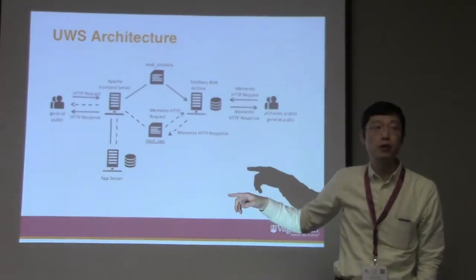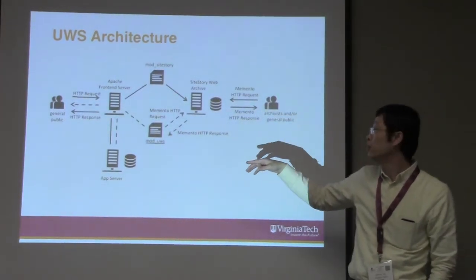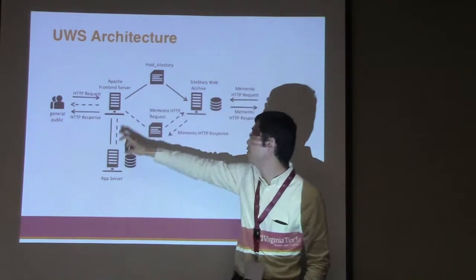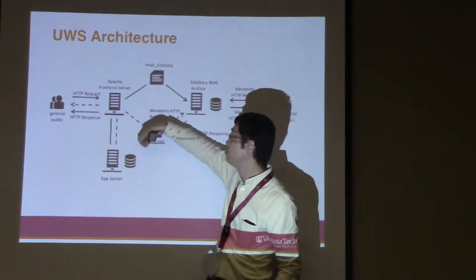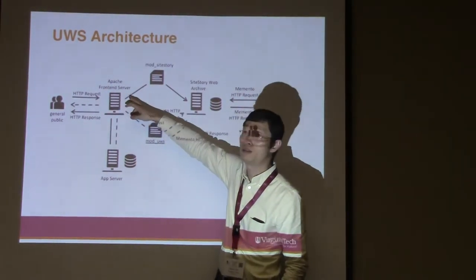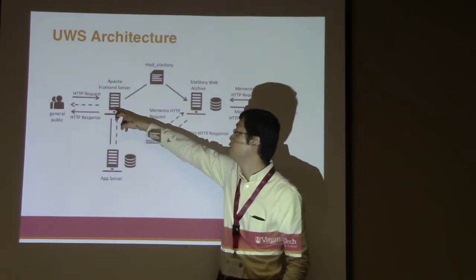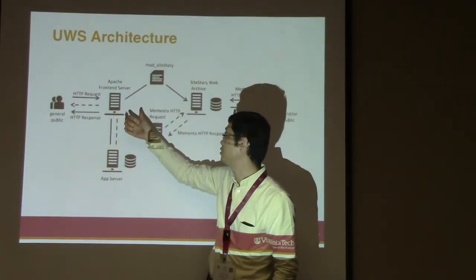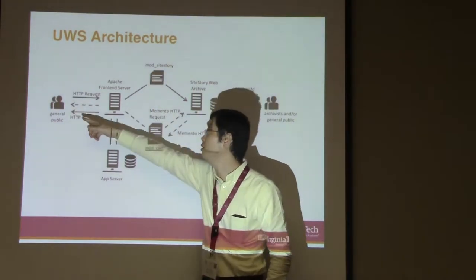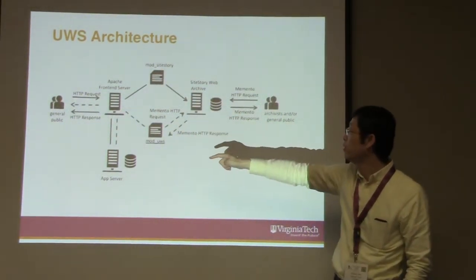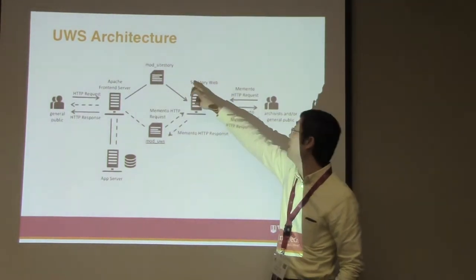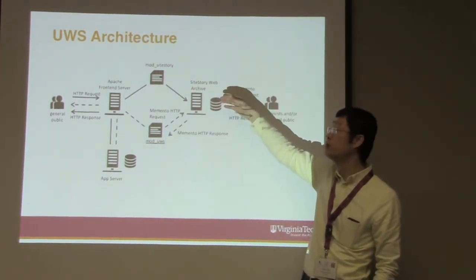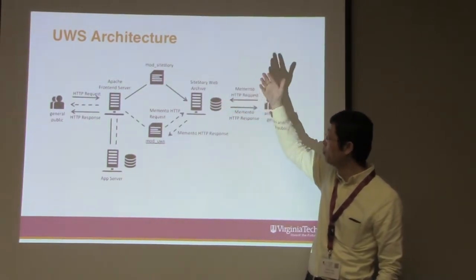This is the system architecture. This part covers all the regular things — you have three-tiered servers: a front-end server, application server, and a database. This is usually what web services are comprised of. You have the general public sending requests to the front-end server, which relays to the application server to do logic and page construction, then the response is sent back to the user. What we added here is a SiteStory Web Archive, which is software developed at Los Alamos — a Transactional Web Archive.